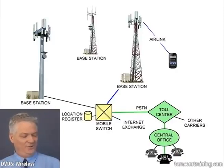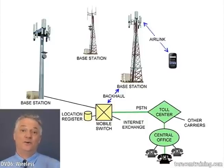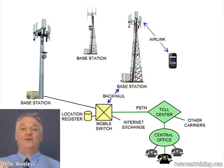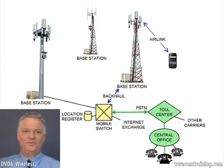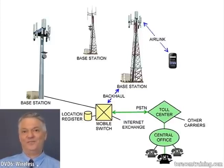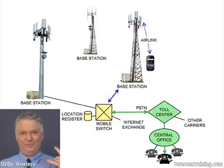When the cell phone user presses the answer button or swipes it, we have voice communications going from the phone over the air link to the base station, then over the backhaul to the mobile switch. The switch bridges the communications internally to its connection to the public telephone network — over the air link, over the backhaul, over the connection to the toll center, over the connection to the central office, and then down the landline to the far end.